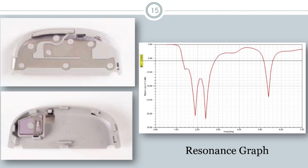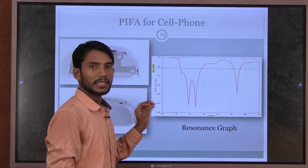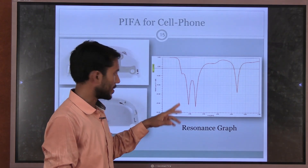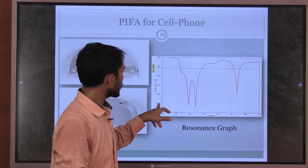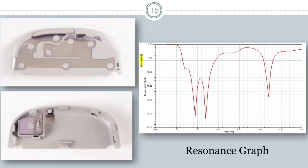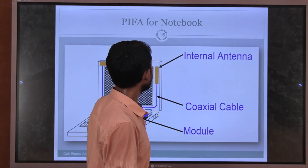From the return loss curve, you can see that this antenna radiates properly and is suitable and applicable in cell phone devices. The return loss depth is coming to more than 25 dB. This specification from the return loss curve confirms this antenna is applicable and fits well in the cell phone.